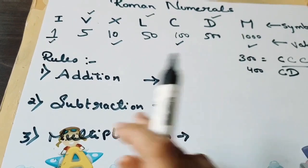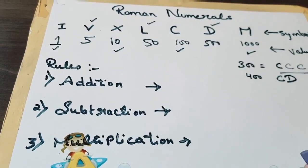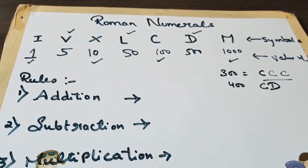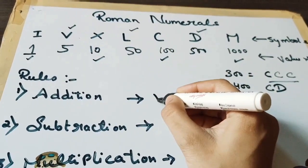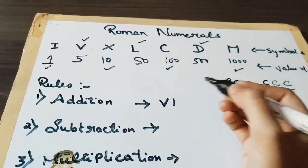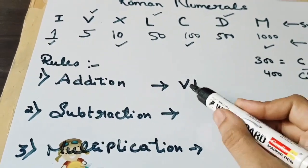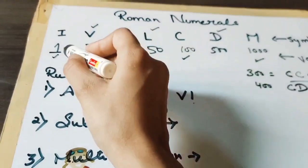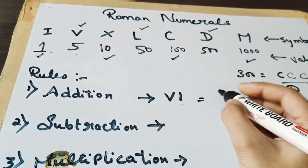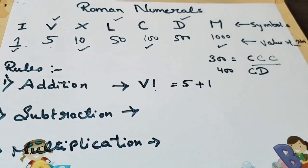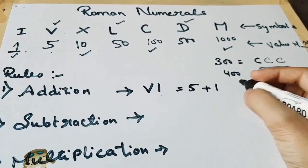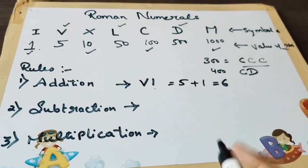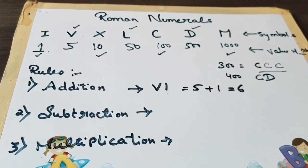Now coming to the rules, first rule is addition. In addition, for example, I am taking V and I. The value of V is 5 and I is 1, so that means 5 plus 1, so that equals to 6. The value of the symbol is 6, and what we are doing is adding.